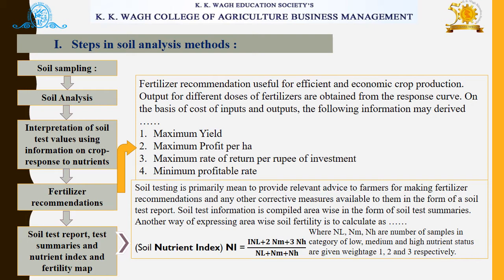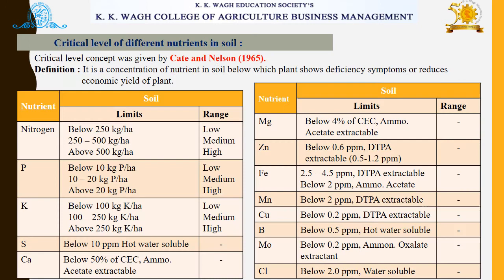Under fertilizer recommendations, they are useful for efficient and economic crop production. Output for different doses of fertilizers is obtained from the response curve. On the basis of cost of inputs and outputs, important information may be derived: maximum yield, maximum profit per hectare, maximum rate of return per rupee of investment, and minimum profitable rate. By doing soil testing, the soil nutrient index is determined using a specific formula.